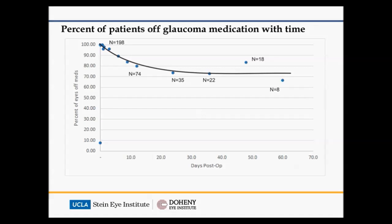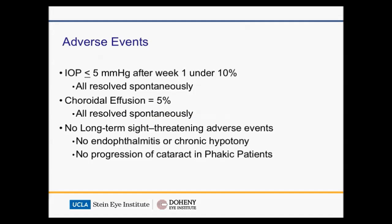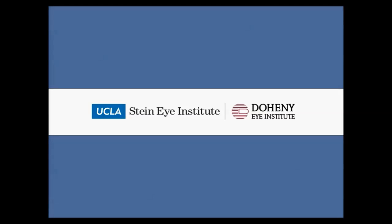About 75% of patients are completely off glaucoma medications after six months, and it seems to do equally well either with or without concomitant cataract surgery. Adverse events are similar to what you may see with trabeculectomy, but we think may be lower. We are involved with the phase three clinical trial — the first phase of 75 patients has been completed, and there's an expanded trial of 400 patients at both Doheny and Stein. It's a randomized trial with trabeculectomy as the gold standard, with a three-to-one randomization: 75% chance of InnFocus micro shunt, 25% chance of trabeculectomy.